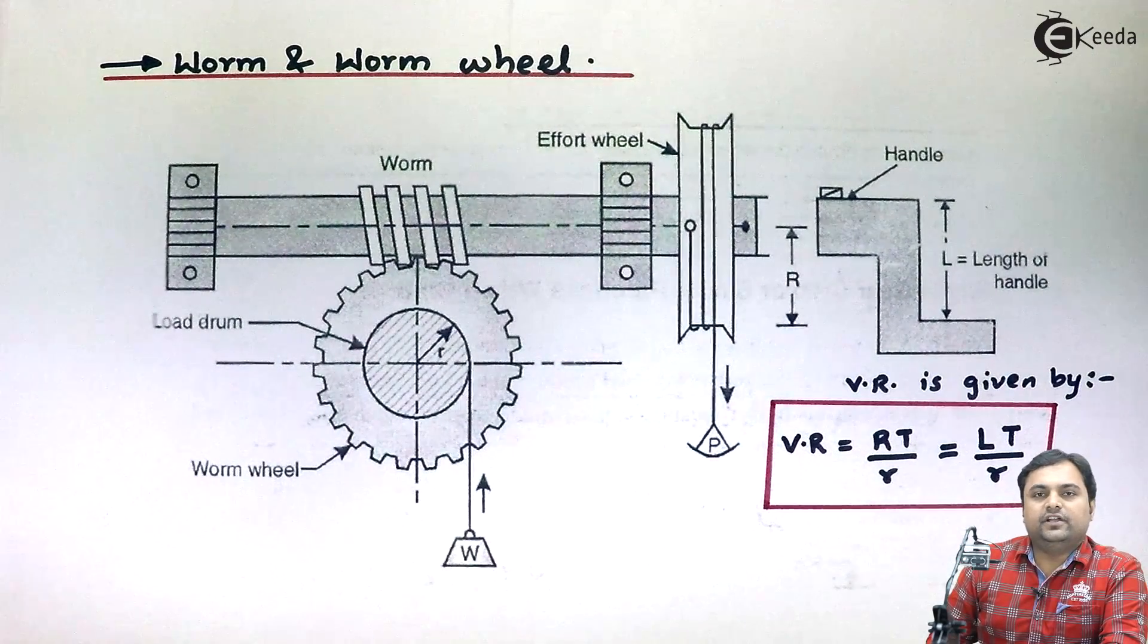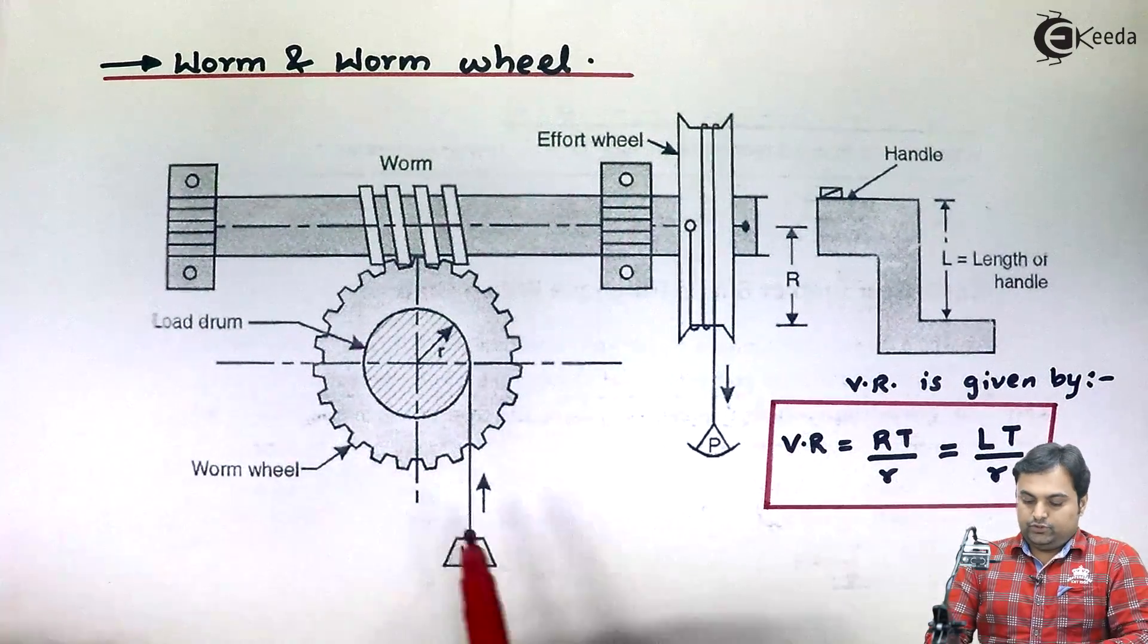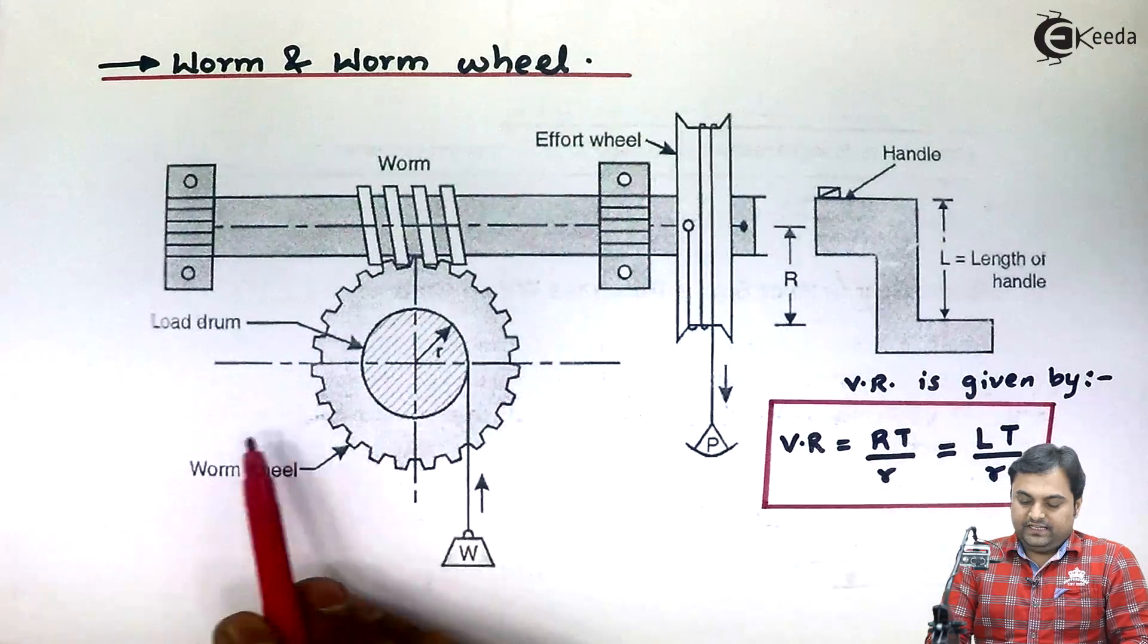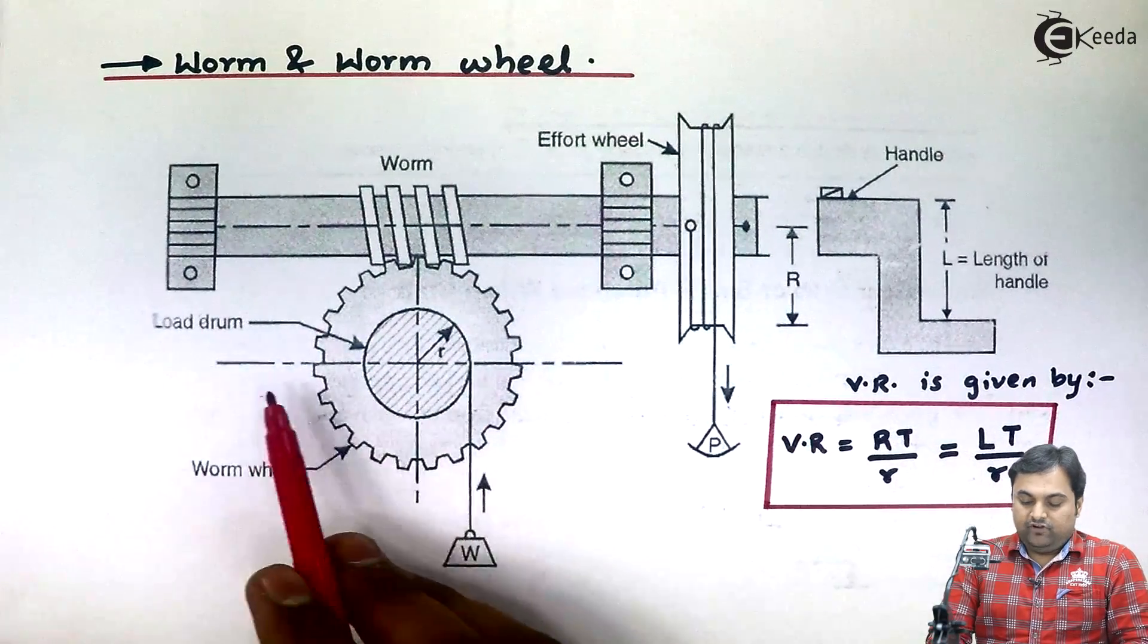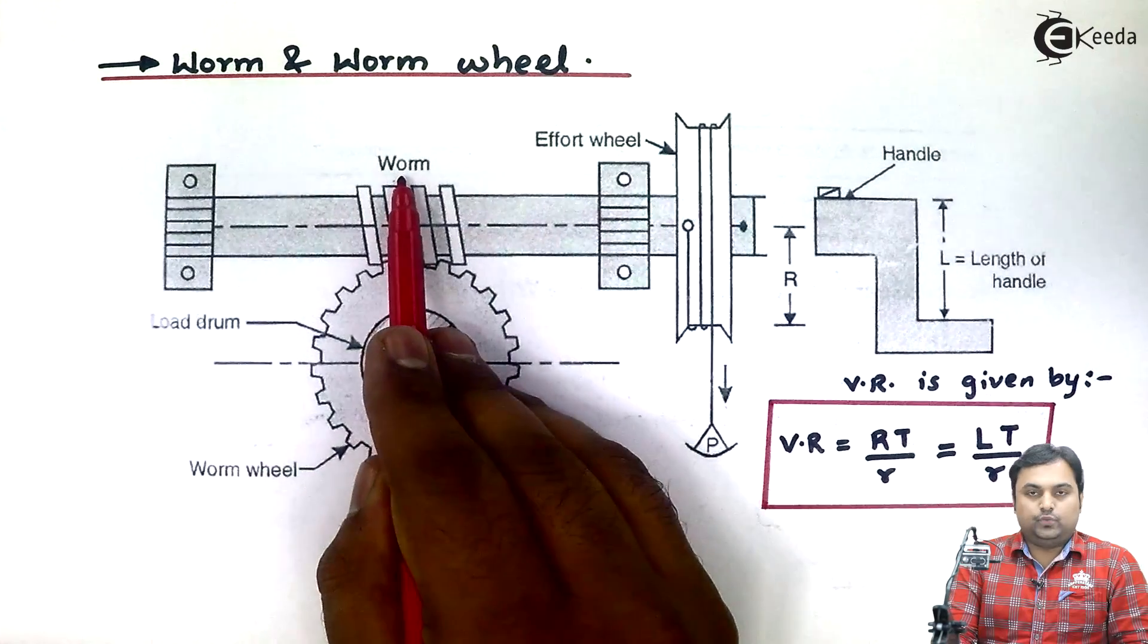We are lifting a heavy load by applying comparatively less effort. So this is the diagram. Here I'll explain the construction part. Worm and worm wheel consists of a screw thread which is called as worm. It is like a screw.